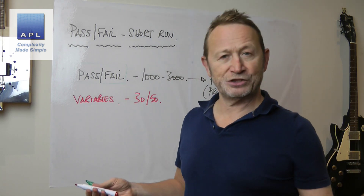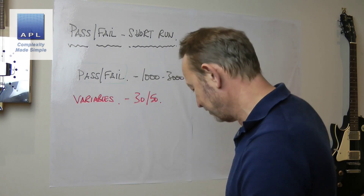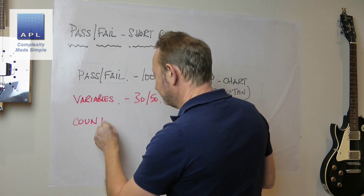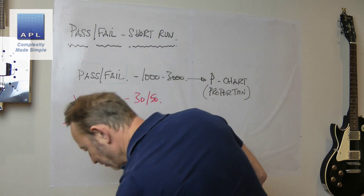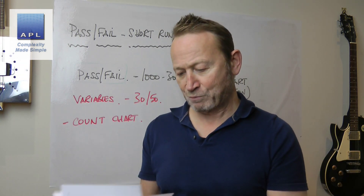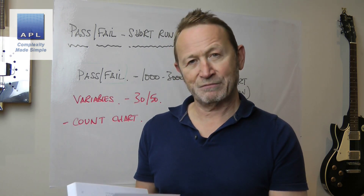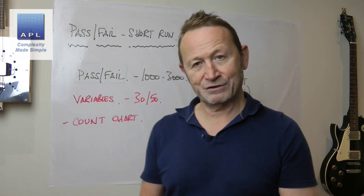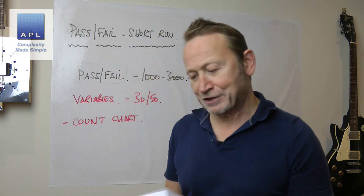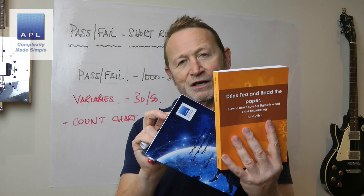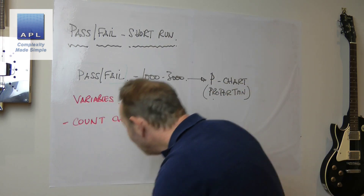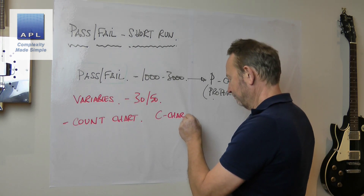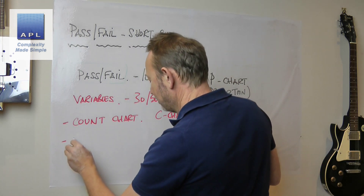The other technique, which is again count data — discrete data — is the count chart. What the count chart does is count the number of defects in each item. If I went through a book and counted the number of typos, I'm just counting and I could plot that on a graph. The difficulty is that one book has about 100 pages while another has about 300 pages — so can I put these two on the same chart?